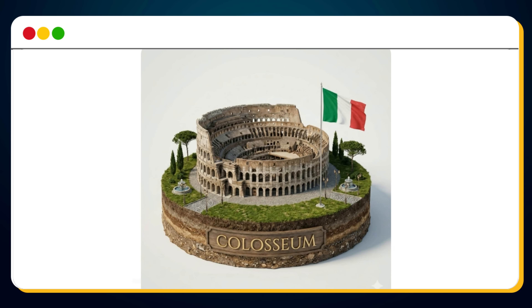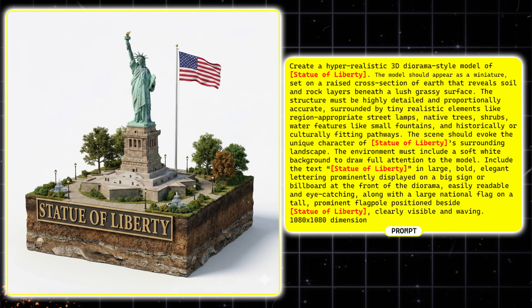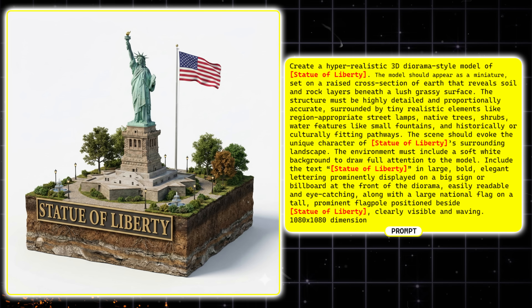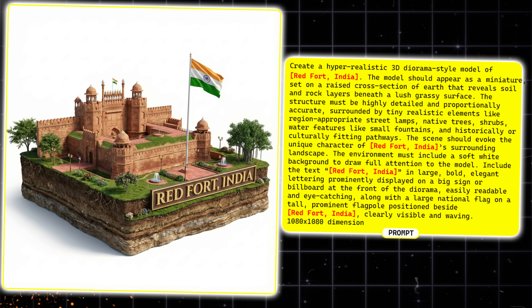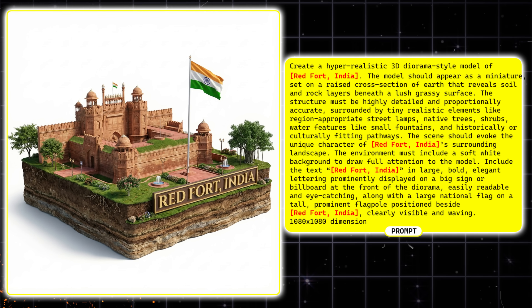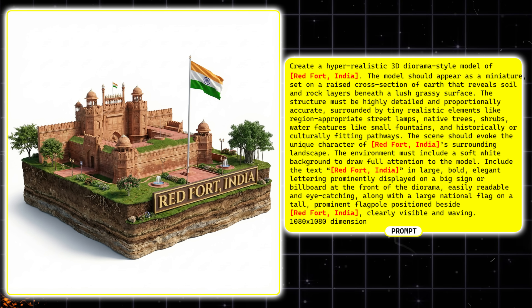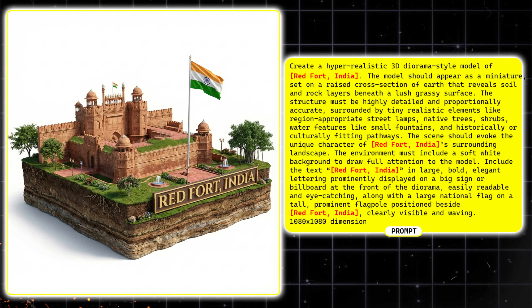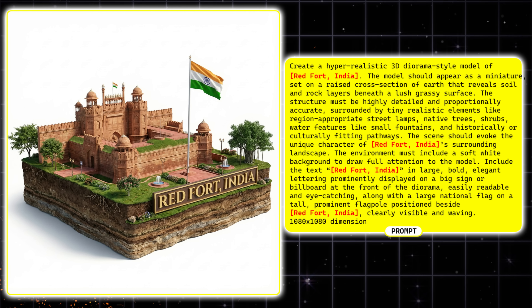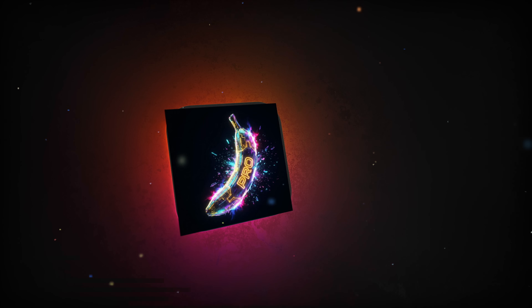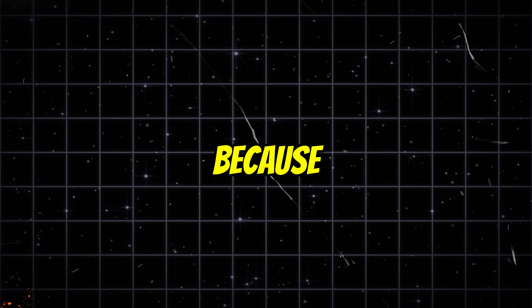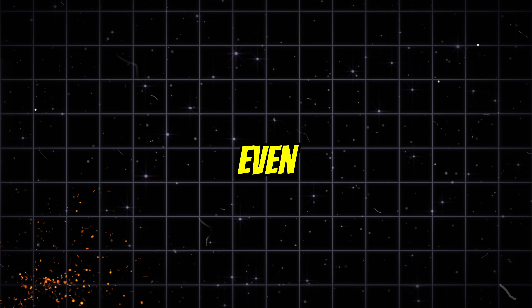It looks like a premium collectible model created from just one line of text. I replaced the monument name with Statue of Liberty, Taj Mahal, and Red Fort, and Nano Banana Pro instantly produced these stunning 3D diorama models, each perfectly detailed with flags, pathways, fountains, and landscaping. Now let's move to use case number four, because the next one is even more mind-blowing.